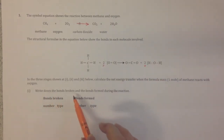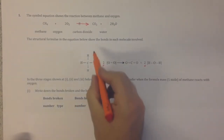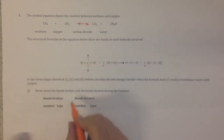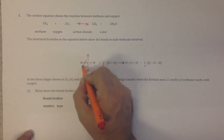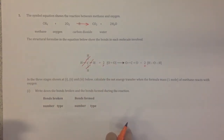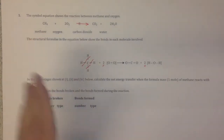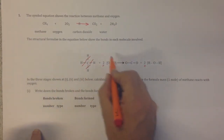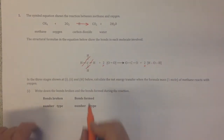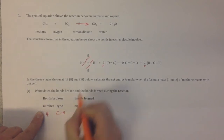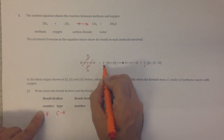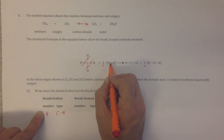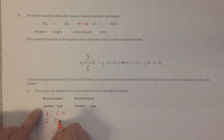The first part asks us to write down the bonds broken and the bonds formed during the reaction. To do this, we look at the molecules on the left-hand side, which are the reactants — these are the bonds that are broken. We have four C–H bonds in methane. We also have one O=O double bond per oxygen molecule, but because we have two molecules of oxygen, that gives us two O=O double bonds broken.